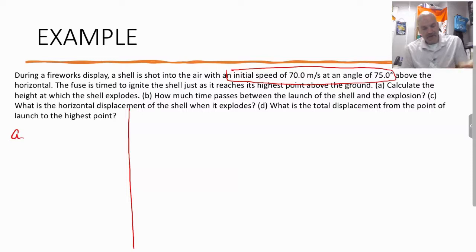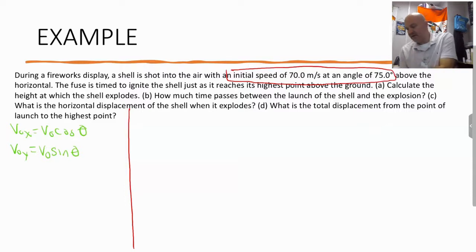All right. So let's do A. So really, the first thing I want to do is I want to break apart that initial velocity vector into x and y. So I'm going to do vox equals vo cosine theta, voy equals vo sine theta. So it's going to be 70 cosine 75. Make sure your calculator is in degrees. So it's 18.1 horizontally and then vertically it's going to be 67.6, and these are meters per second.